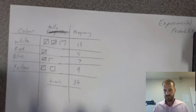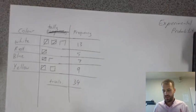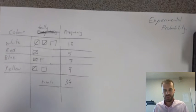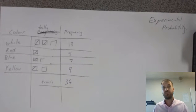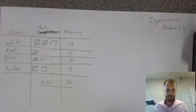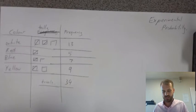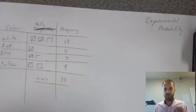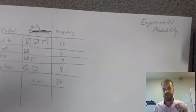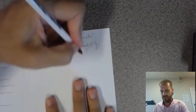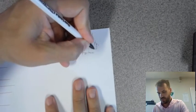34 trials total. Now, this is where it gets really important. What is the probability that when I reach into here next, I pull out, say, a red one? Because obviously red, it seems like there's not many red ones in there. And I want to know, what's the probability of pulling out a red one? So, let's use our experimental probability formula.